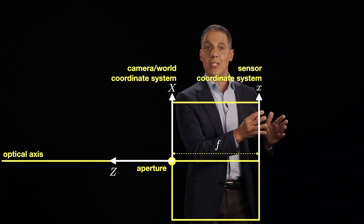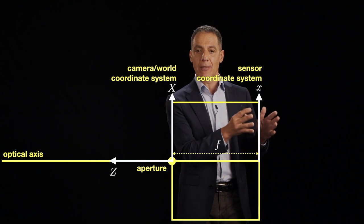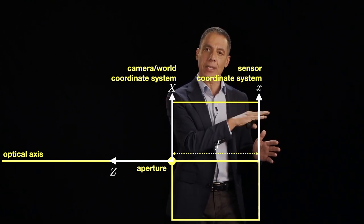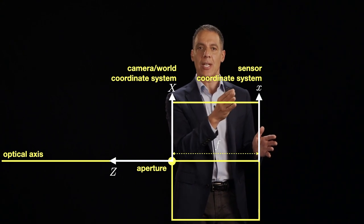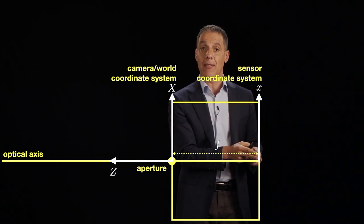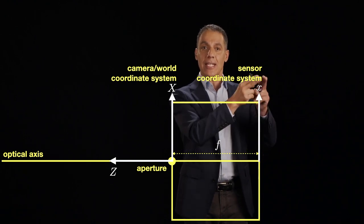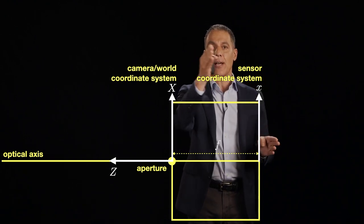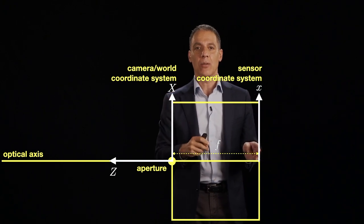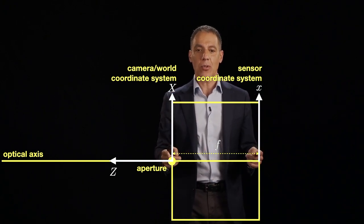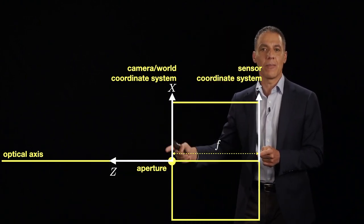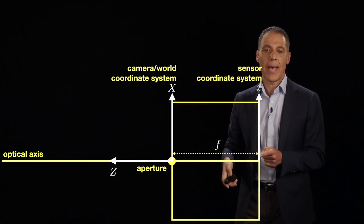The second coordinate system is the image coordinate system, denoted with a lowercase x. Image coordinates will be lowercase; world coordinates will be uppercase. Its origin is on the optical axis and its axis is parallel to the capital-X world coordinate axis. I define the focal length as little f — the distance from the front of the camera to the back.